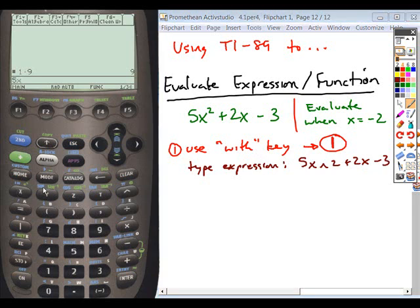When you look at these calculators, a couple rows above the numbers, x, y, z, t are there. Every other letter can be accessed by hitting the alpha key and then choosing the corresponding letter on one of the keys. So if you take 5x² + 2x - 3, you're going to type that expression.